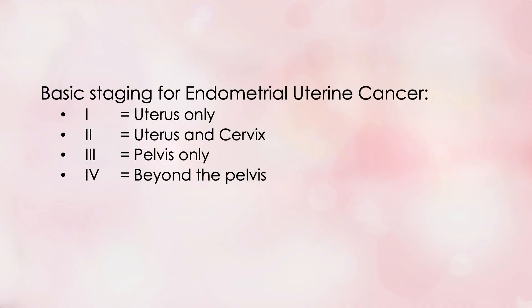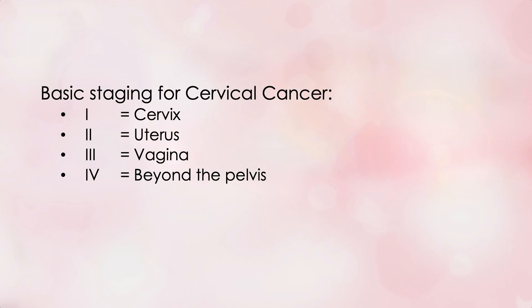Now for grading and staging — the designation of how far the cancer has spread. For today's comparison I'll use a simplified system with Roman numerals only, leaving out subcategories. For endometrial uterine cancer: Stage 1 is the uterus only, Stage 2 is the uterus and cervix, Stage 3 is the pelvis only, and Stage 4 is beyond the pelvis. For cervical cancer it's a bit different: Stage 1 is the cervix, Stage 2 is the uterus, Stage 3 is the vagina, and Stage 4 is beyond the pelvis. Let's add all of that to our chart.